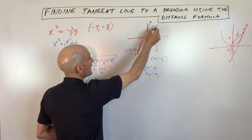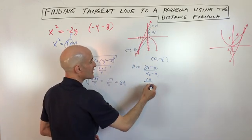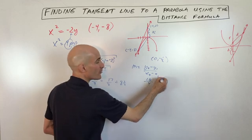And so we're just going to take 8 minus negative 8, which is 16, over 0 minus negative 4, which is 4. So you can see we're getting a slope of 4.